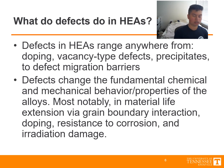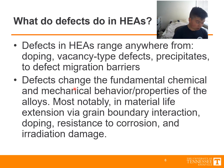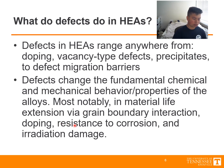What do defects ultimately do in high entropy alloys? Defects in high entropy alloys range anywhere from doping and vacancy-type defects, to precipitates, to defect migration barriers. Defects change the fundamental chemical and mechanical behavior properties of the alloys. This has caused a major uproar in research possibilities of new material discoveries and novel applications — most notably their use in material life extension via grain boundary interaction, doping resistance to corrosion, as well as irradiation damage.